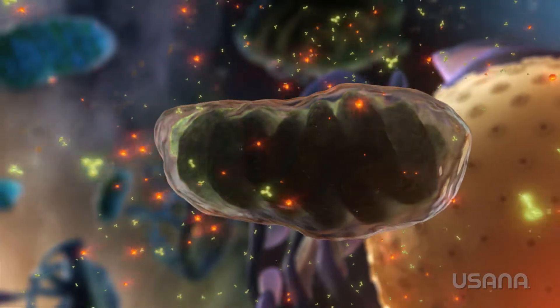Some of the waste products created during energy production are destructive free radicals. As mitochondria age, they grow less efficient, producing less energy and more free radicals, causing more damage.